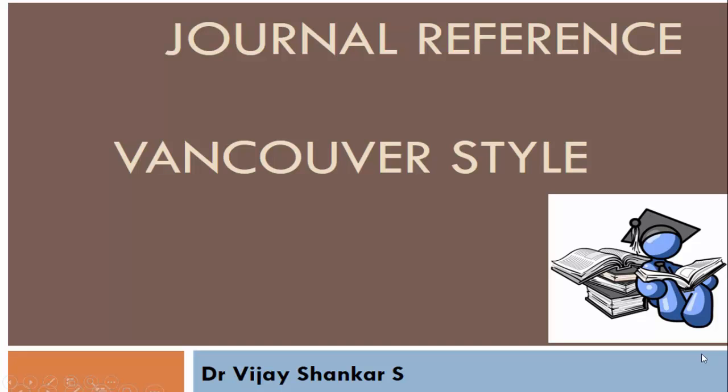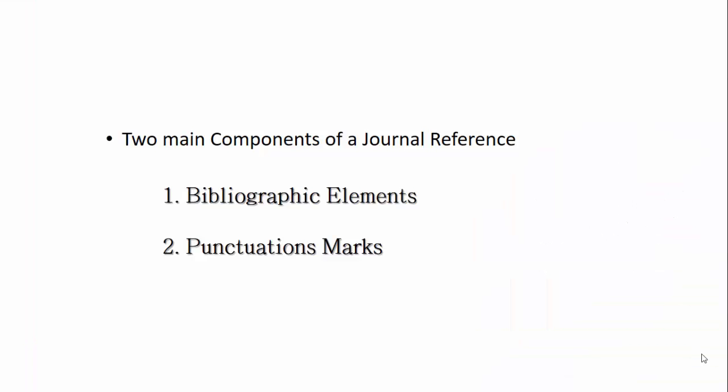This video will show you how to write a journal reference using Vancouver style. First of all, we need to know that there are two main components of a journal reference: one, bibliographic elements, and two, punctuation marks.